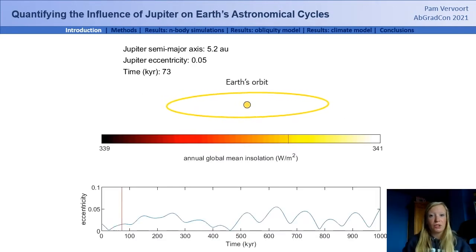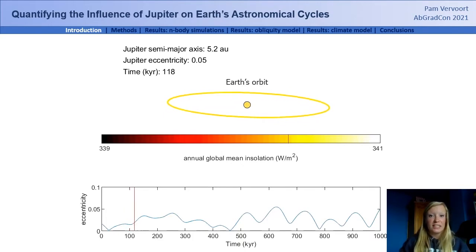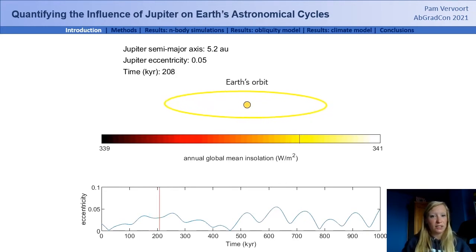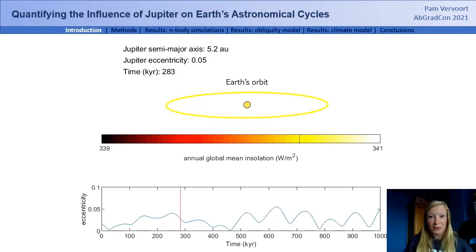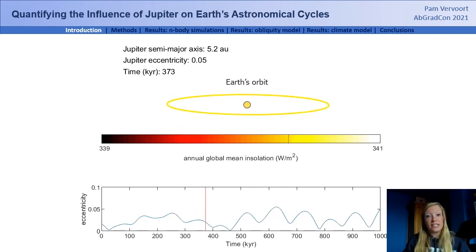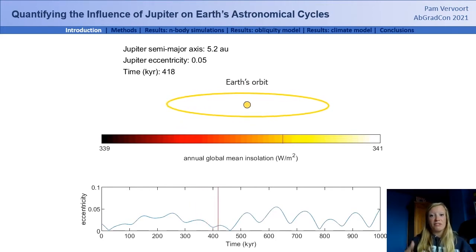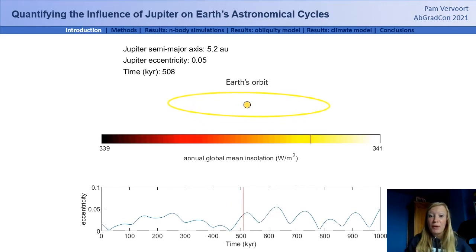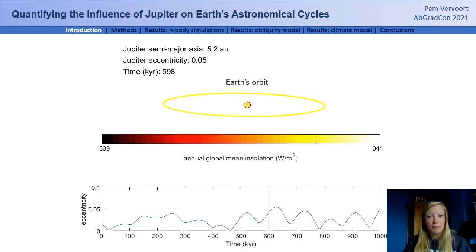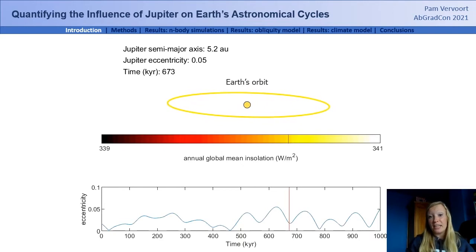Currently, Jupiter drives quasi-periodic cycles in the ellipticity, or eccentricity, of Earth's orbit. The cycles are roughly 100,000 kiloyears long and modulated by a 400 kiloyear cycle, as can be seen in the bottom panel. For the Earth, the orbit remains relatively circular and the amplitude of the eccentricity cycles is small. This means that the variability in the total amount of annual global mean insolation varies only slightly, yet these slight changes are sufficiently large to drive drastic changes in global climate — for instance, the glacial-interglacial cycles of the last million years are paced at eccentricity cycles.